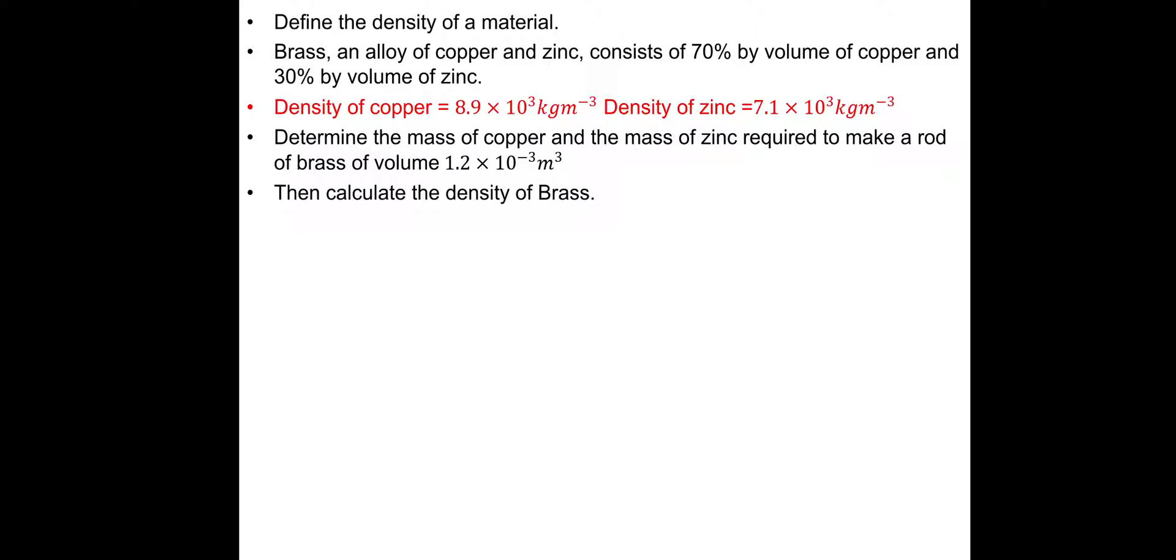Brass and alloy of copper and zinc consists of 70% by volume of copper and 30% by volume of zinc. Then we've got both the density of copper and the density of zinc. And the question says, determine the mass of copper and the mass of zinc required to make a rod of brass of volume 1.2 times 10 to the minus 3 cubic meters. Then finally, calculate the density of brass.